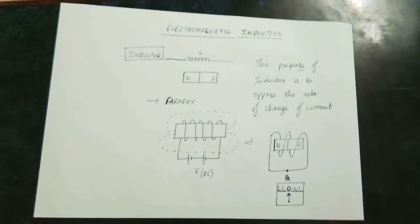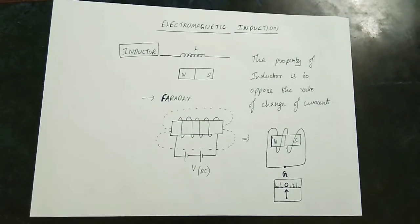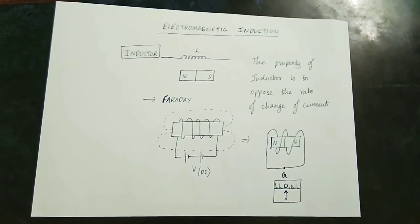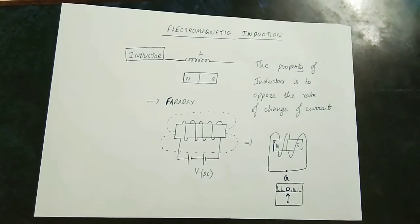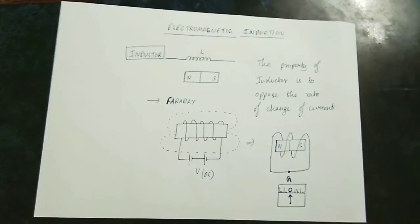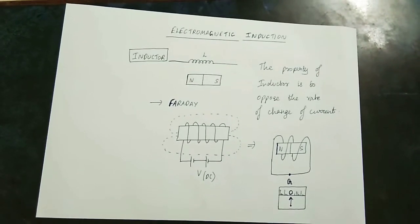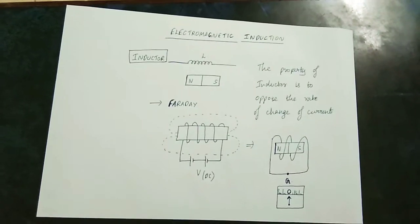The induced current will oppose the change which causes it. That means a beam of induced current will be produced. If it happens, it will oppose the same thing.